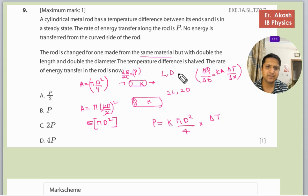Delta T was given. Delta T by delta X is L, this is the length. So this is P.